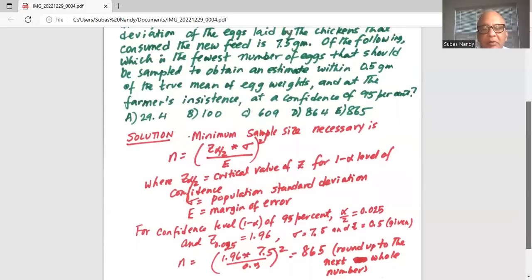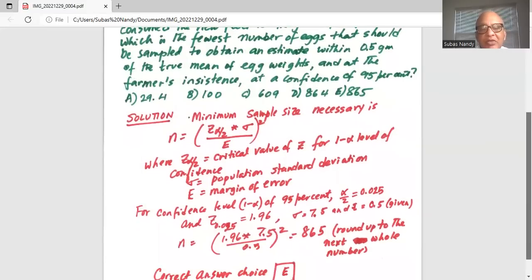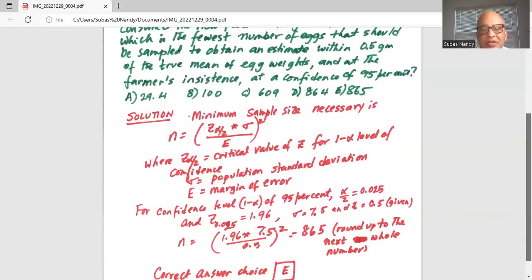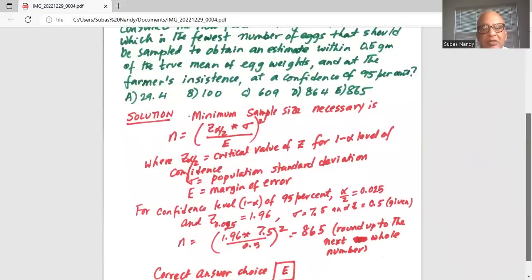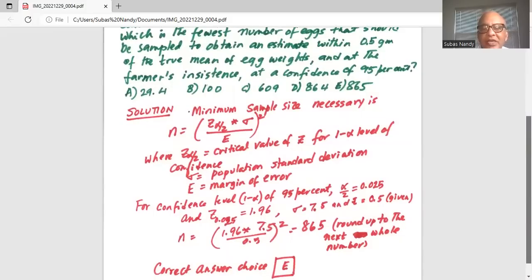We are given sigma is 7.5 and E margin of error is 0.5. Hence, n is equal to 1.96 which is the z alpha by 2 times 7.5 which is the standard deviation divided by margin of error which is 0.5 and the whole thing is squared. So the answer is 865 because we always round up the minimum sample size to the next whole number.